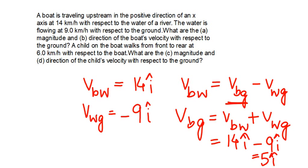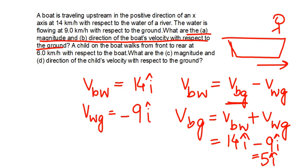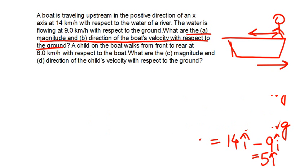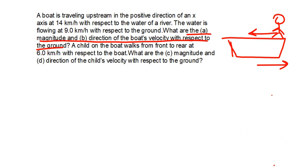So the boat's velocity is 5 km per hour in the positive x-direction, and we have answered parts A and B. Now, the next part: a child on the boat walks from front to rear. Since the boat is moving in the positive x-direction and the child is moving from front to rear, the child's velocity must be in the negative î direction. We will denote the velocity of the child with respect to the boat as VCB, and this is given as 6 km per hour in the negative x-direction, so it is minus 6 î.